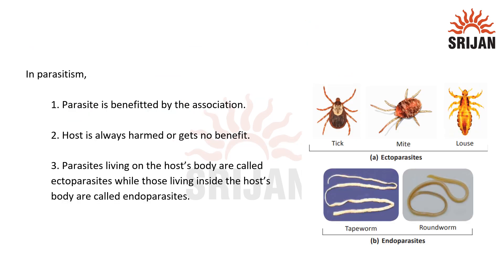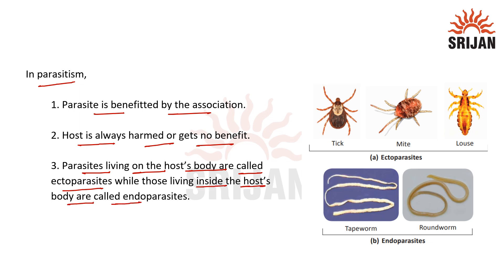In parasitism, the parasite is benefited by the association, whereas the host is always harmed or gets no benefit. Parasites are of two types: ectoparasite and endoparasite. Parasites that live on the surface of the host body are called ectoparasites, whereas those that live inside the body of the host organism are called endoparasites.